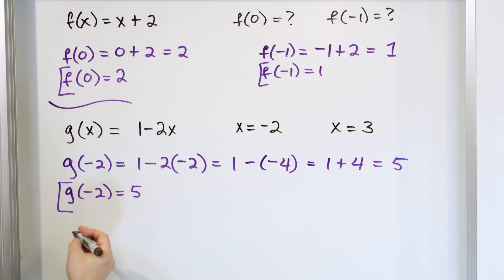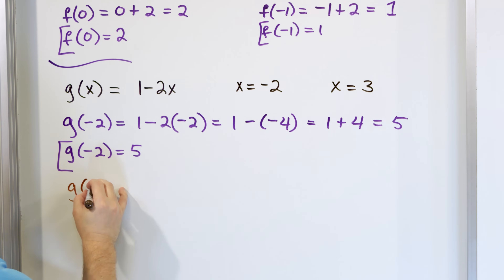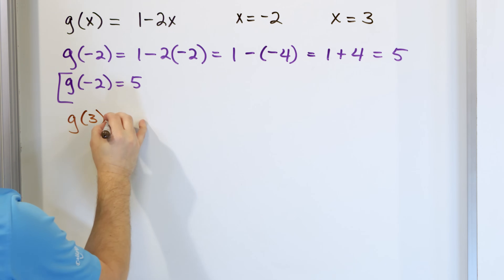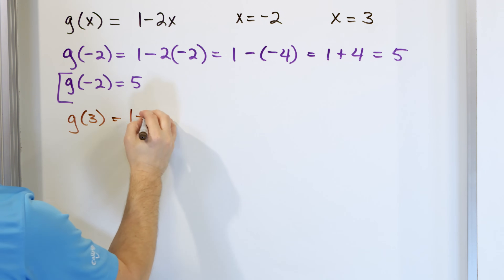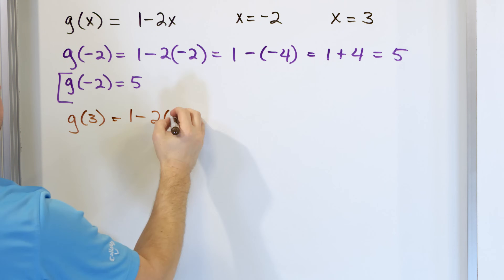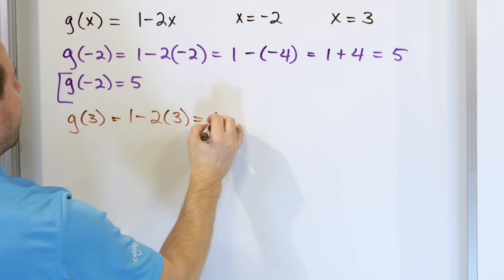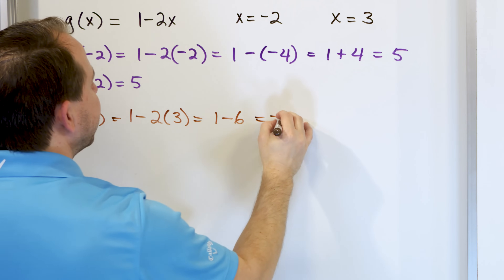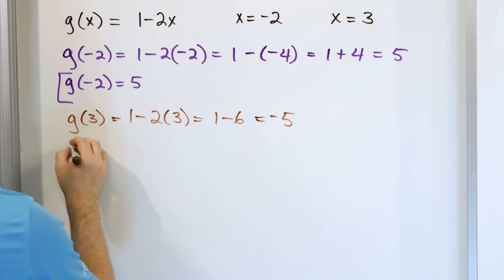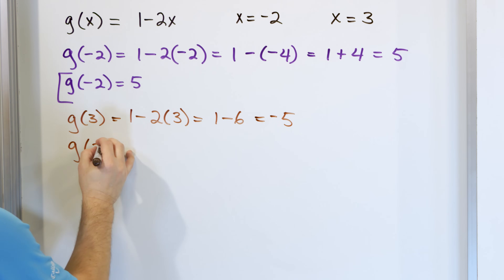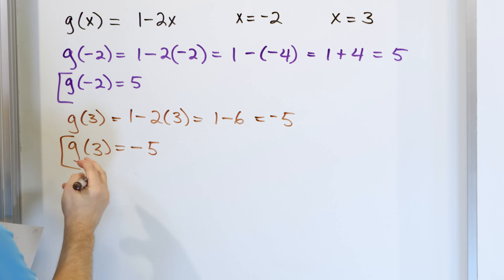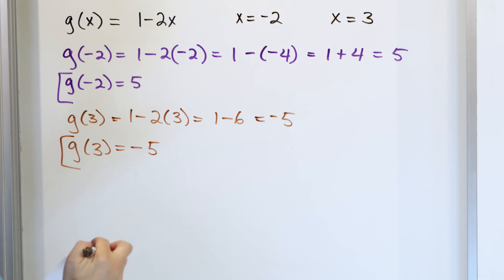For the next one, when x equals 3, we take g evaluated at 3 and say it's 1 minus 2 times 3, which is 1 minus 6. And 1 minus 6 is negative 5. So g evaluated at x equals 3 is negative 5, and that's the final answer for that one.